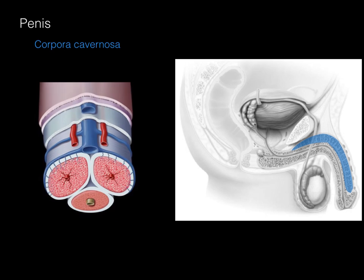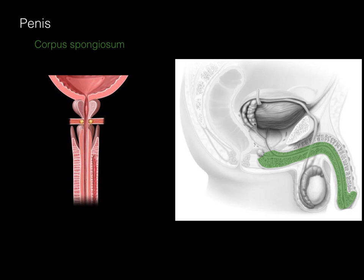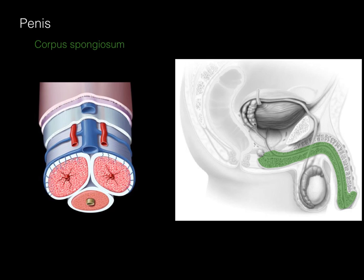In this step dissection, we see the paired corpora cavernosa flanking the dorsal surface of the penis on either side of the urethra. The corpus spongiosum is the erectile tissue that surrounds the urethra and is found in the head of the penis. In the coronal section, the corpus spongiosum is also erectile tissue that expands and helps keep the lumen of the urethra as open and patent as possible. In the step dissection, the corpus spongiosum surrounds the tube in the middle, which is the urethra.